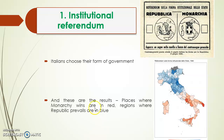These were the results. The places in blue are where the Republic prevailed. The places in pink or red are where the monarchy prevailed and won. You can see Italy was divided into two. In the north, we had the monarchy winning; in the south, the Republic winning. In the south, we had the monarchy.